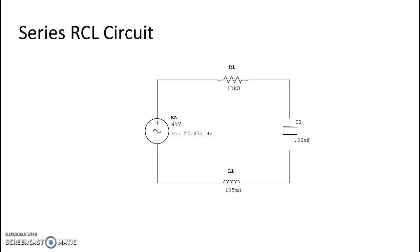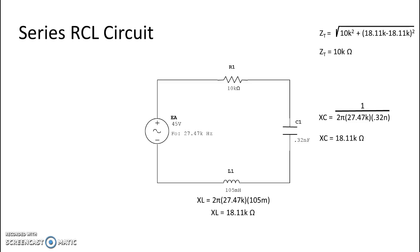...we get 27.47 kHz for our f0 resonant frequency. Now using that number we're going to figure out our ohmic values and we see that inductive reactance is 18.11k and capacitive reactance of course is the same. Now impedance is going to be resistance, just like the previous one, so impedance is 10k ohms.